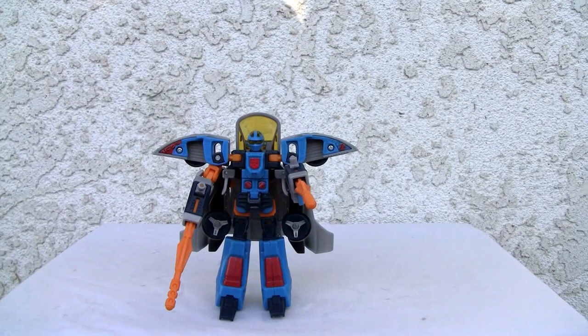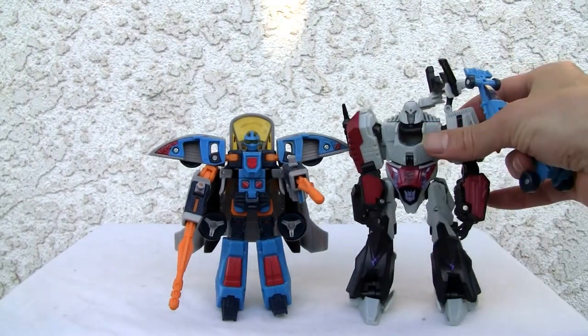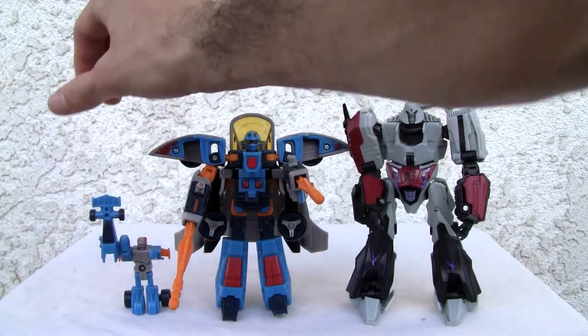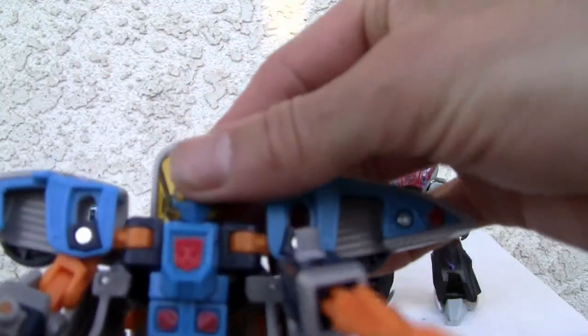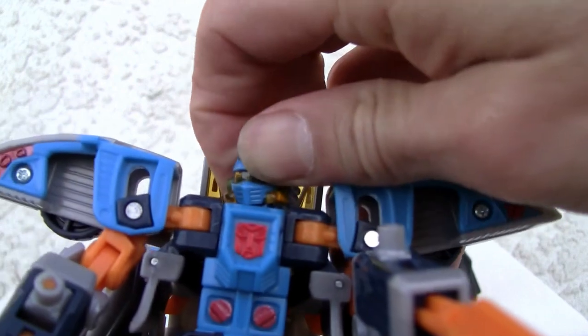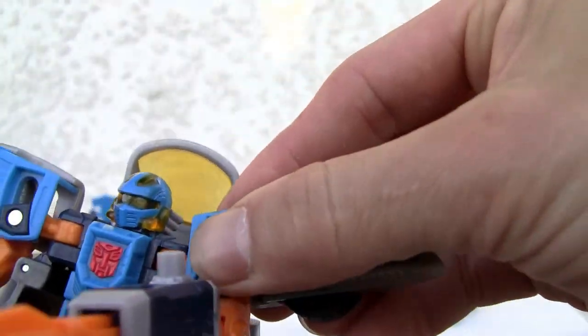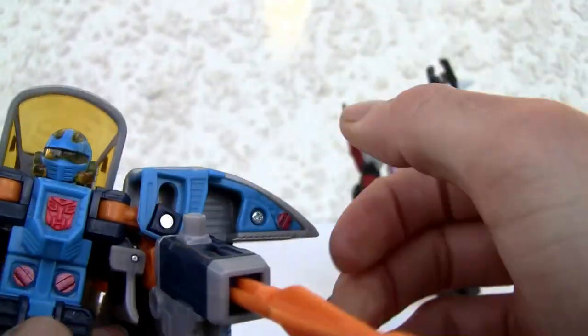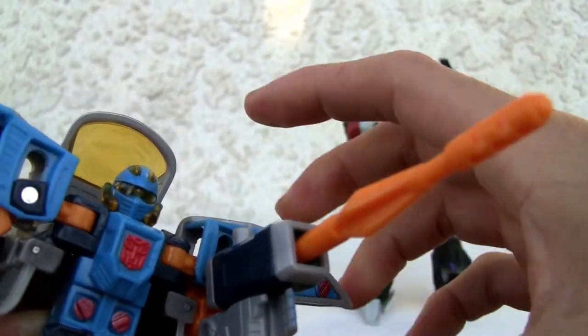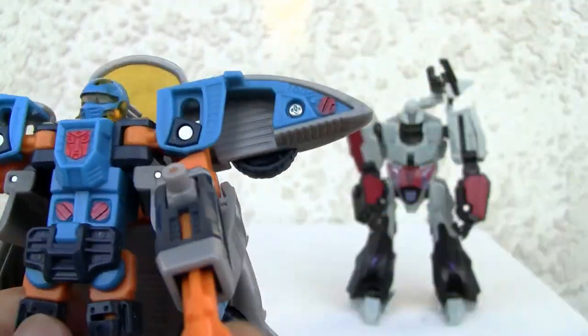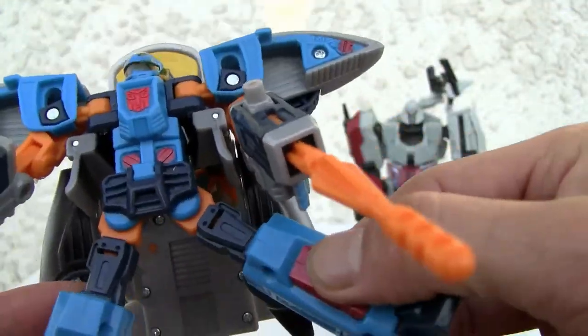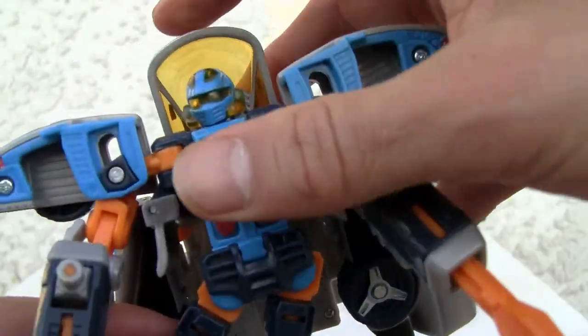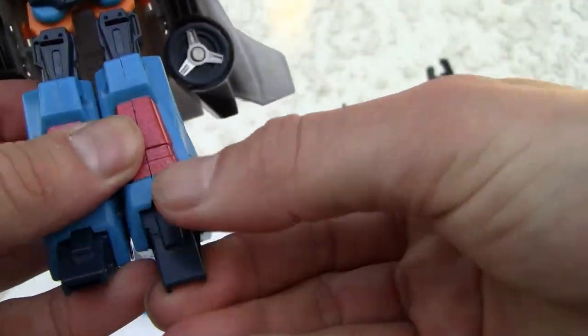I'll give you a size comparison. So it's slightly shorter than the modern. Oh, I forgot about articulation, really limited. Head moves side to side. The shoulder of course is limited from that transformation joint, so it doesn't move much. Double jointed elbow, which I really like. No wrist swivel, no waist swivel. The hips move out and that's it. You got a thigh swivel but no knee, and of course the ankle and feet pivot.